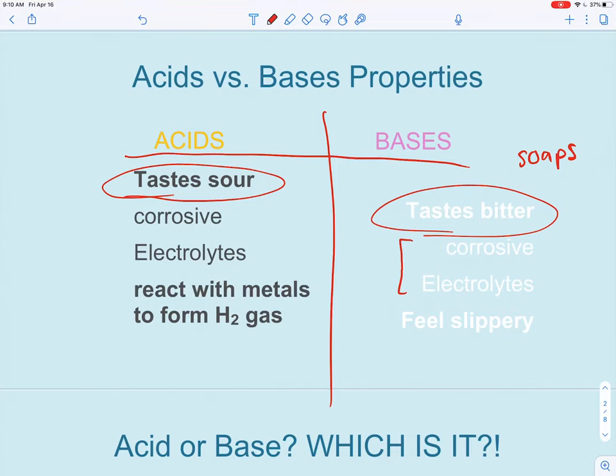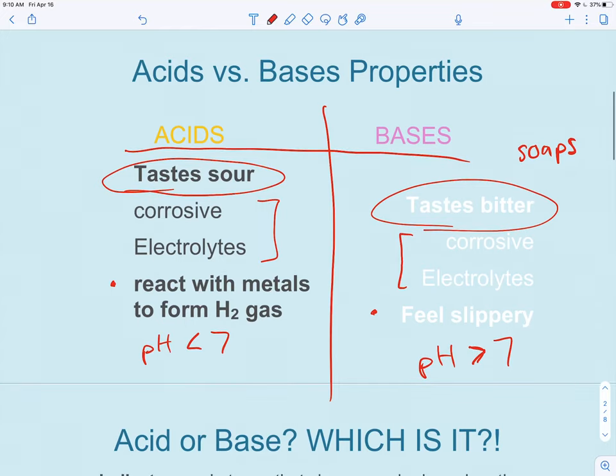They also share some properties. They're both corrosive and they both contain electrolytes. Acids on the other hand react with metals to form hydrogen gas and bases feel slippery. Again, think soaps. Other properties we briefly mentioned: acids have a pH of less than 7, pH greater than 7 for our bases.